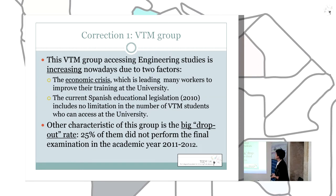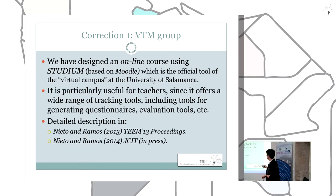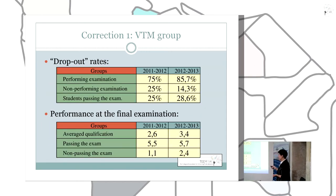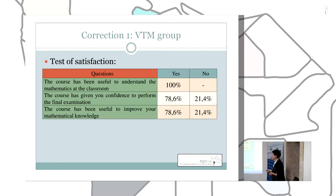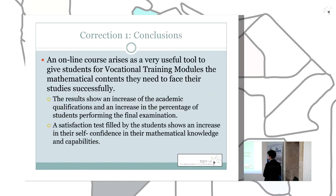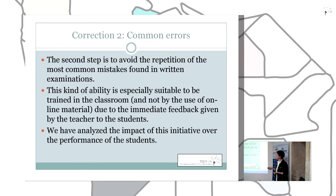Regarding the results for the vocational training modules group: we have already published results on the online tools we designed, and a detailed description can be found in the listed references. To summarize, the group's performance in examinations has improved and the average qualification has raised. The satisfaction tests showed very good results — all students said the course was useful to understand mathematics in the classroom. So this part has been successful. An online course is very useful for these students, but we need a second step for written examination skills, and this kind of ability is not well suited to online material because it requires immediate feedback, which is easier to provide in the classroom.